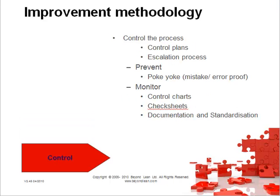Once we've carried out the improvements, what we need to do is control those improvements. Otherwise there's a risk that things will slip back to the way they were before. We're looking to control the process — pulling together control plans and an escalation process, preventing variation from occurring. Tools include Poka-Yoke, which stands for mistake or error-proofing, monitoring the process using control charts, check sheets, documentation, and standardization.